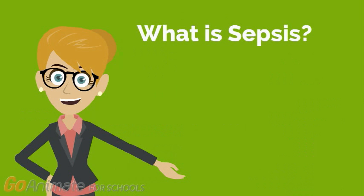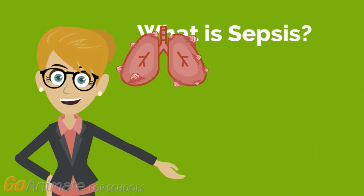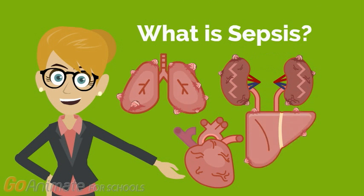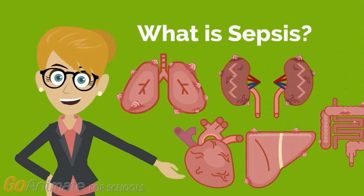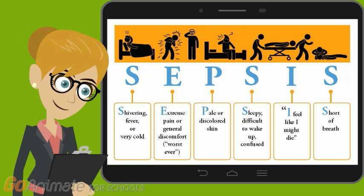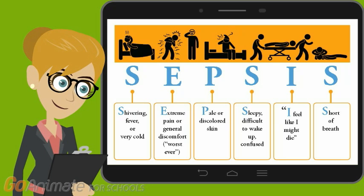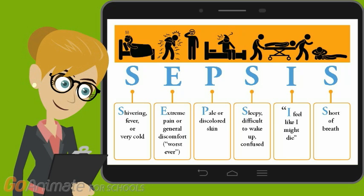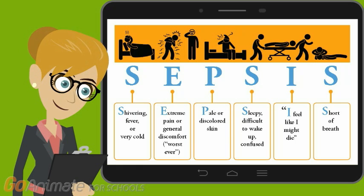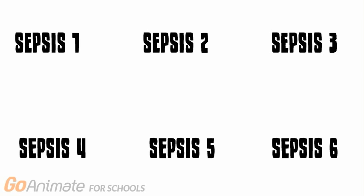So without further ado, what is sepsis? Sepsis is multi-organ shock caused by the body's overreactive inflammatory response to infections. Symptoms include slurred speech, extreme shivering or muscle pain, passing of urine, and severe breathlessness.